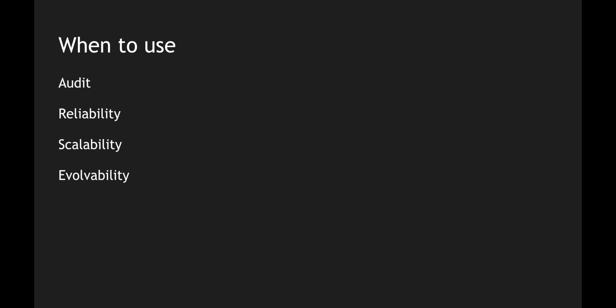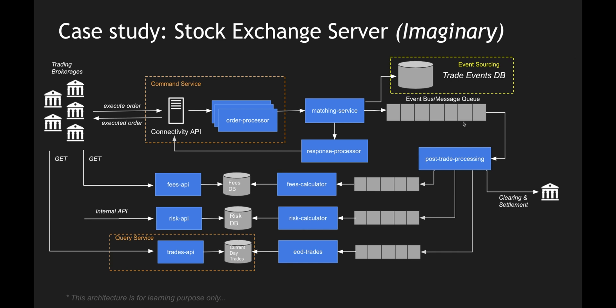It also helps in the evolvability of your architecture, because you can individually write a different model for your writes and a different model for your reads, allowing you to evolve your entire system without a tight coupling between the read and write APIs. Finally, you can also build parallel models — building an entirely similar kind of system but with a different logic. For example, instead of doing post-trade processing, you could publish messages directly to clearing and settlement, or build an entirely different data model from the events.